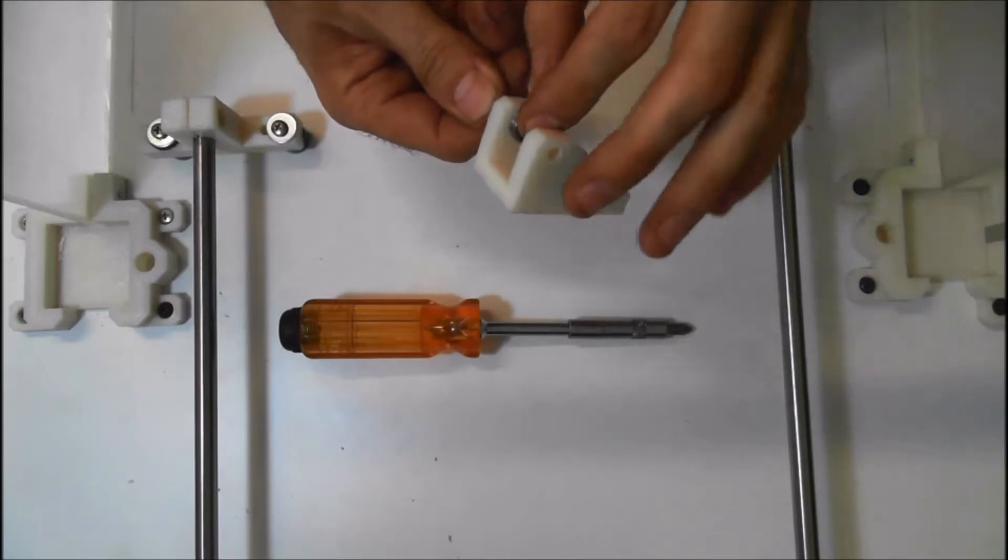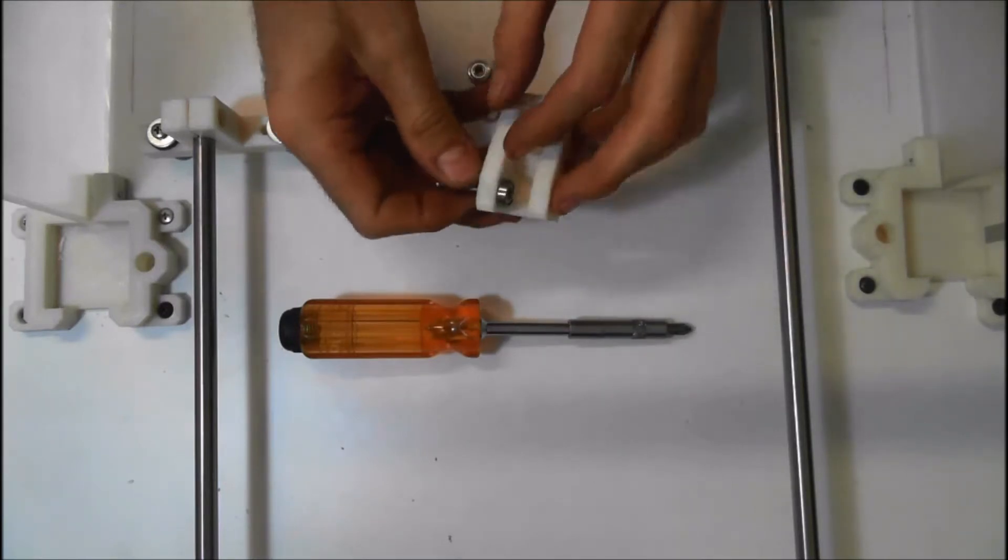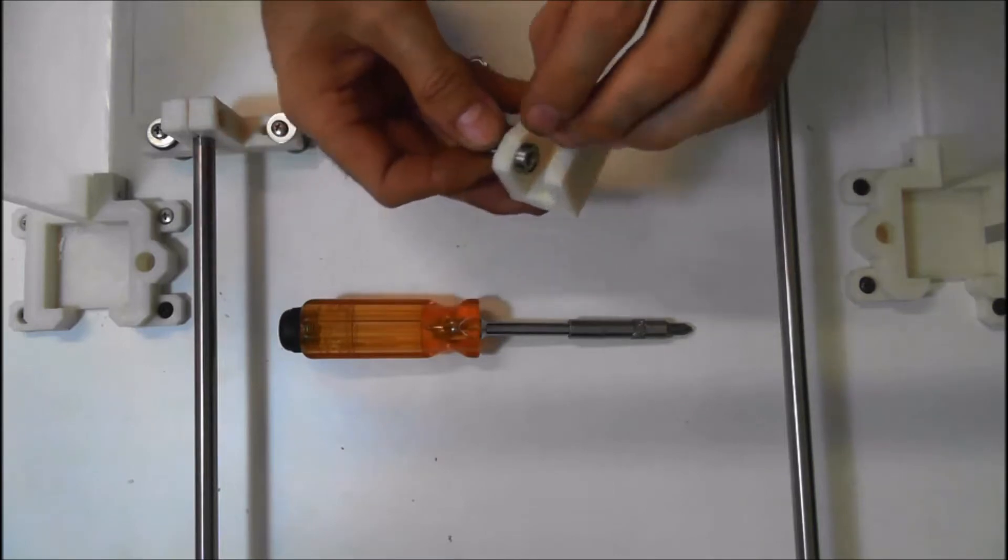Put a bearing on there. Keep screwing through. I'm going to put the three bearings in between and then the washer on the outside.